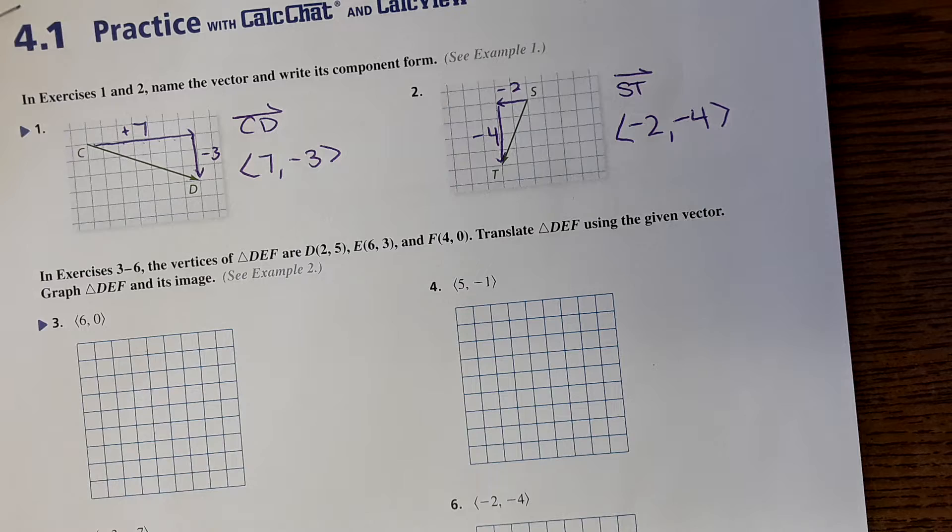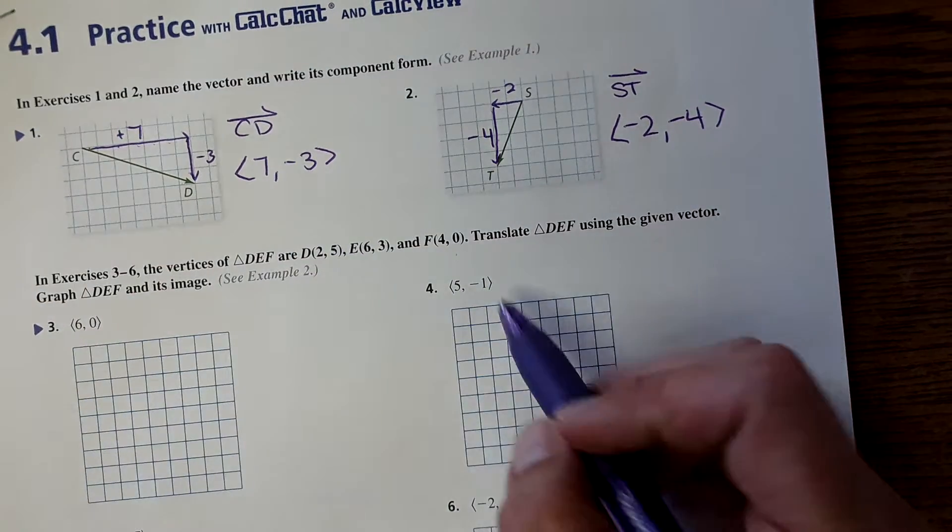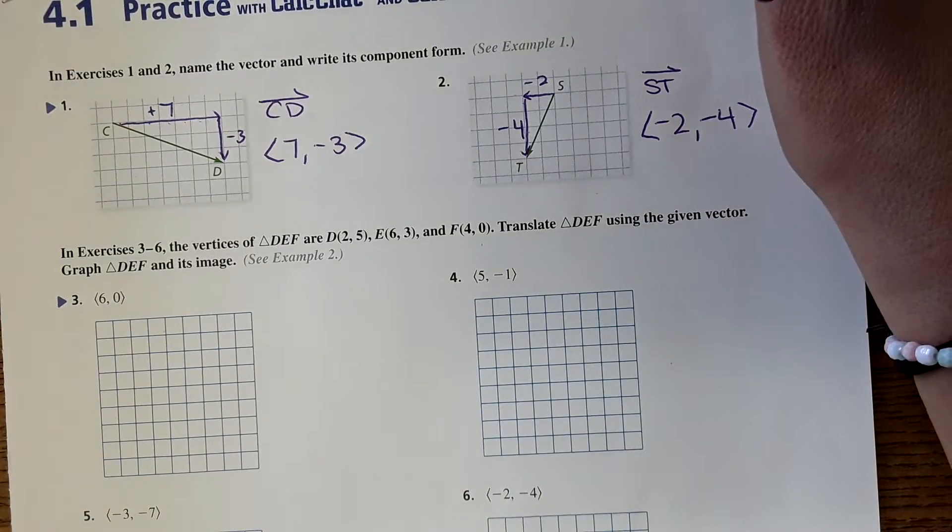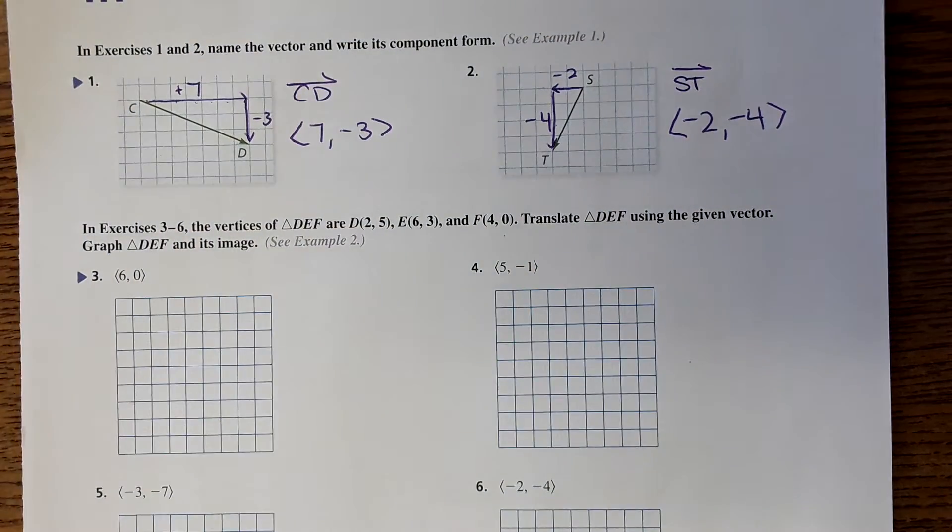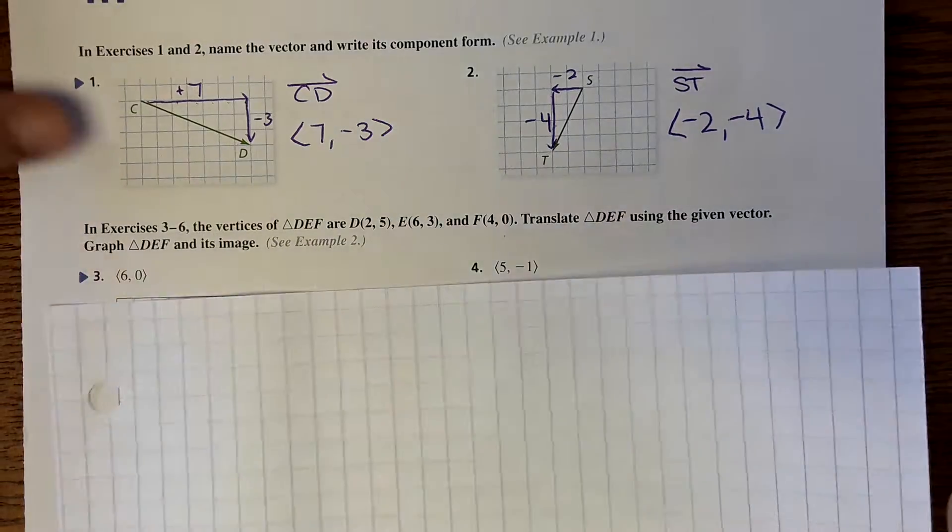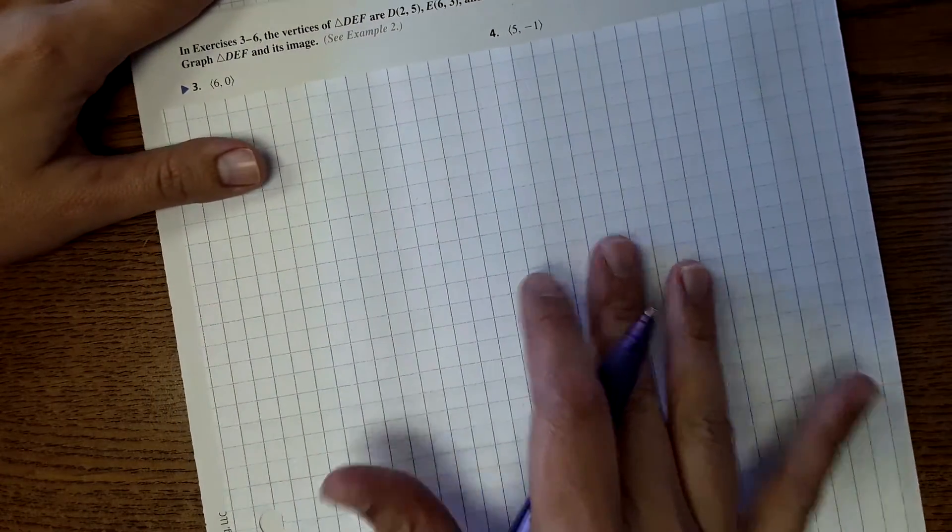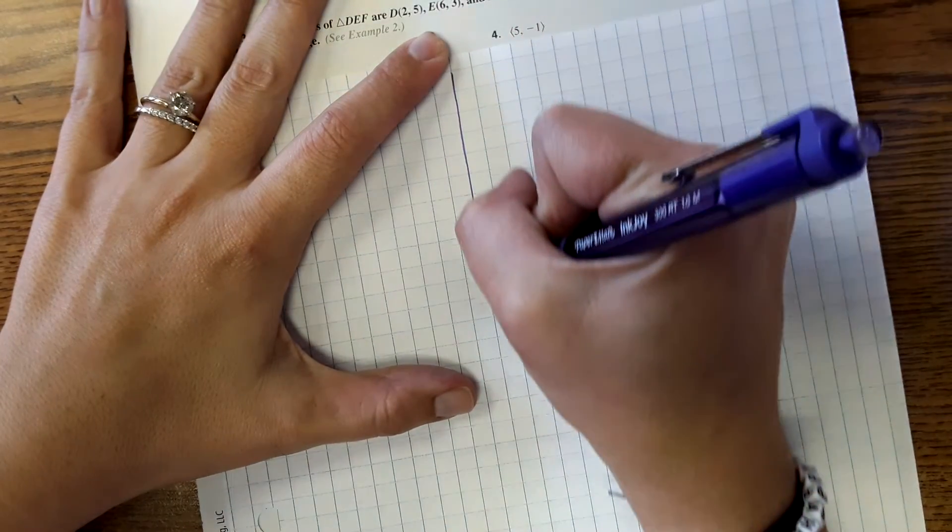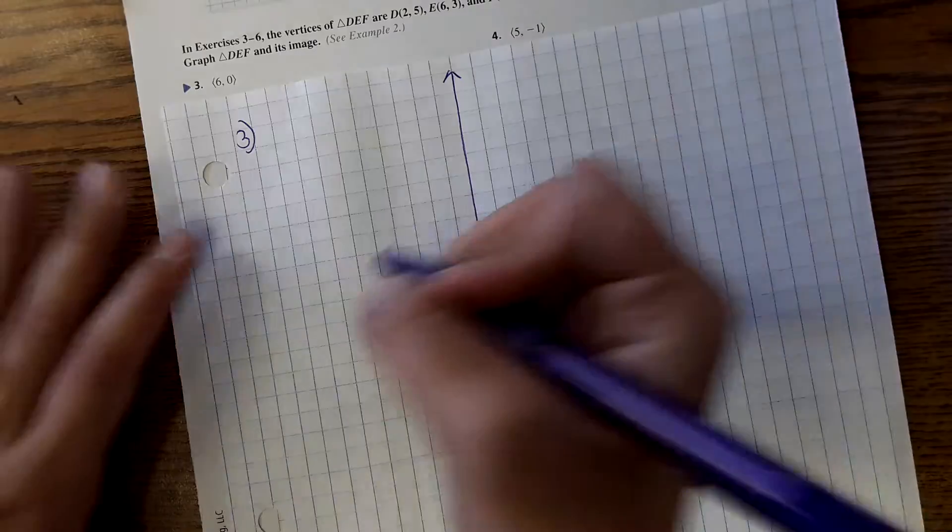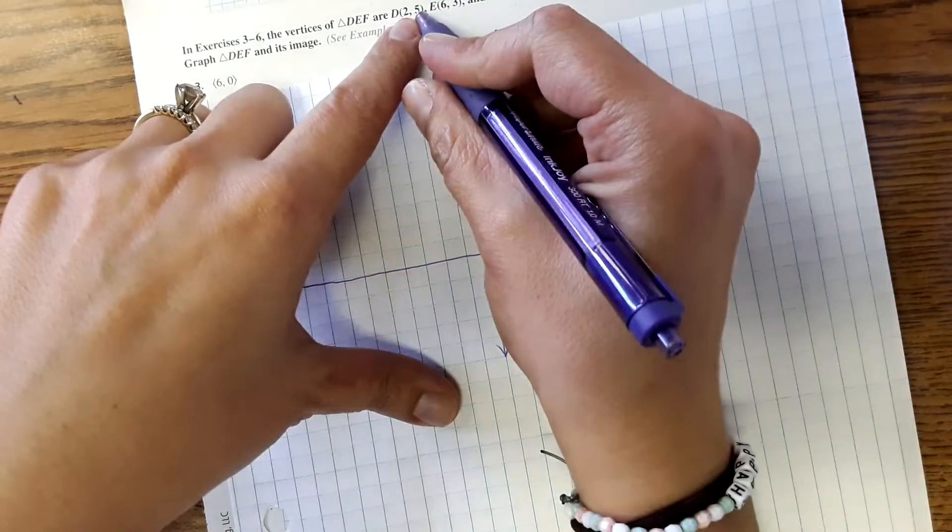And then for the next example, we're doing translation, so we're going to be sliding the shape. Our first shape is triangle DEF. It has its coordinates, and it says to translate it based on the given vector. Now, with these graphs, actually none of the translations fit on these little graphs. So to make this a little bit easier and more clear, I'm going to use graph paper to do these, and I've also left some graph paper with the sub.